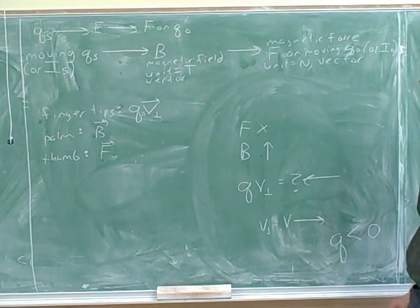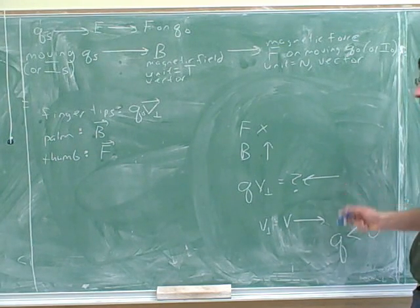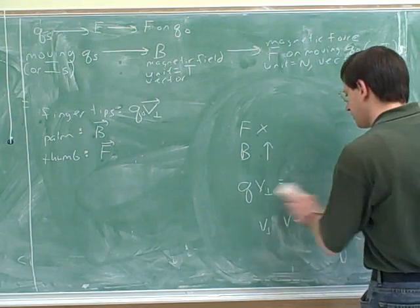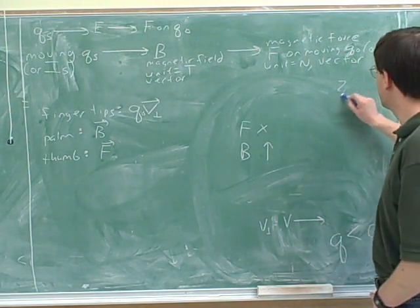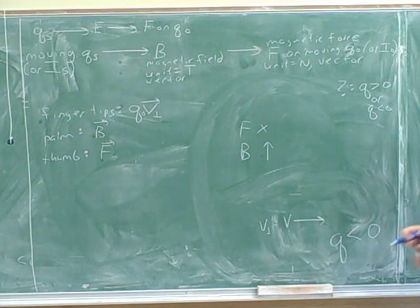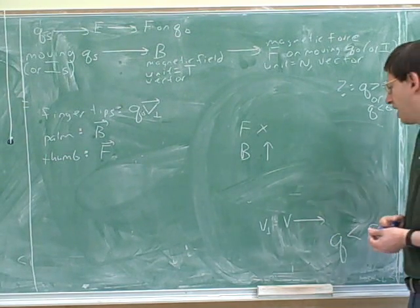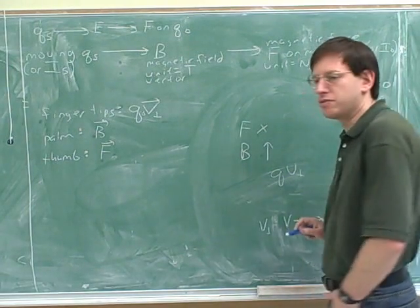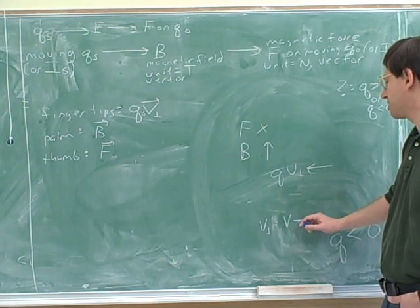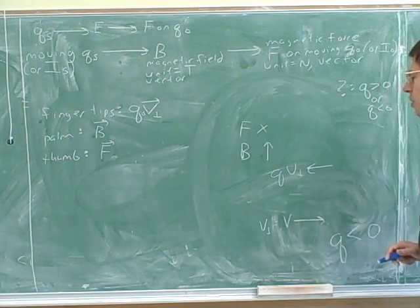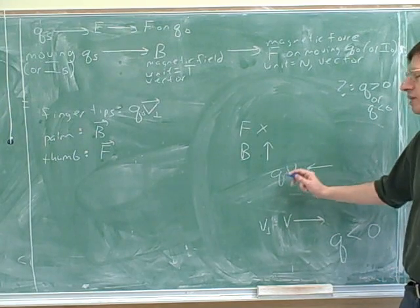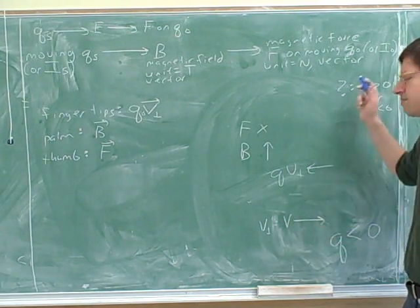The only way QV perpendicular could be opposite to V perpendicular is if the test charge is negative. So now we know we have to deal with a negative test charge. I made this problem easier than it would be on the test because I split it into two parts. On a test, they would just give you this information and ask whether Q is positive or negative. You would first figure out QV perpendicular — which we found points to the left — and since V perpendicular is to the right, which is opposite, you would know Q is negative.